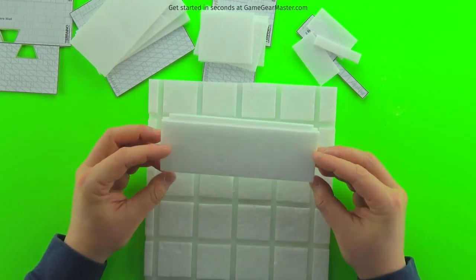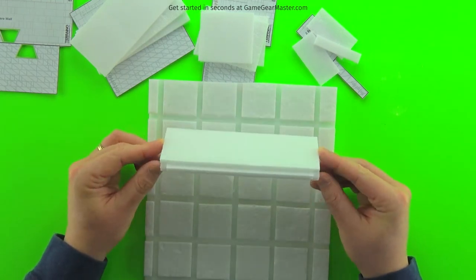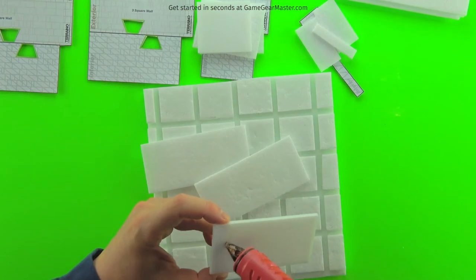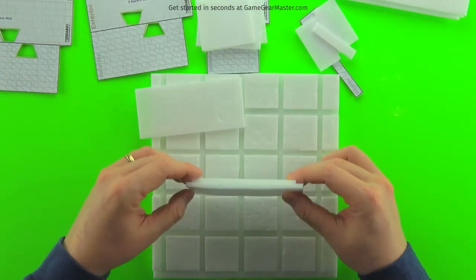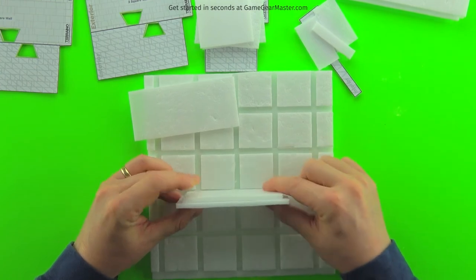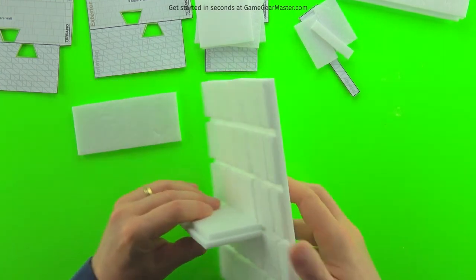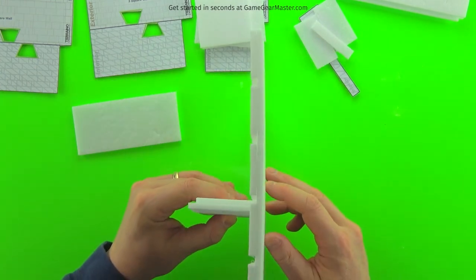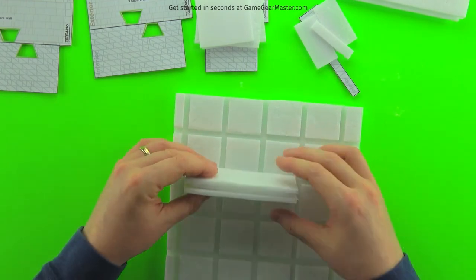You can see the two sides here are even or close enough to being even. Then we're just going to add the other wall on the other side and then it's done. One finished four square wide wall. The procedure is the same for each one of the walls. Glue on the center piece, make sure the sides are even, check the depth of the tongue and then add the other side and you're done.